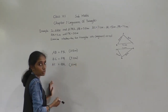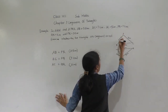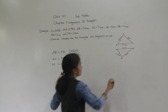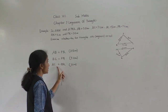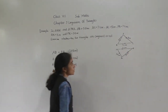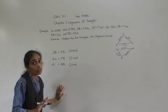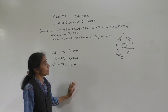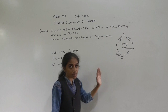So each of them have the same measurement — these 3 sides are equal. AB is equal to PR, BC is equal to PQ, and AC is equal to QR. So three sides of one triangle are equal to the three sides of another triangle, meaning these both triangles are congruent.